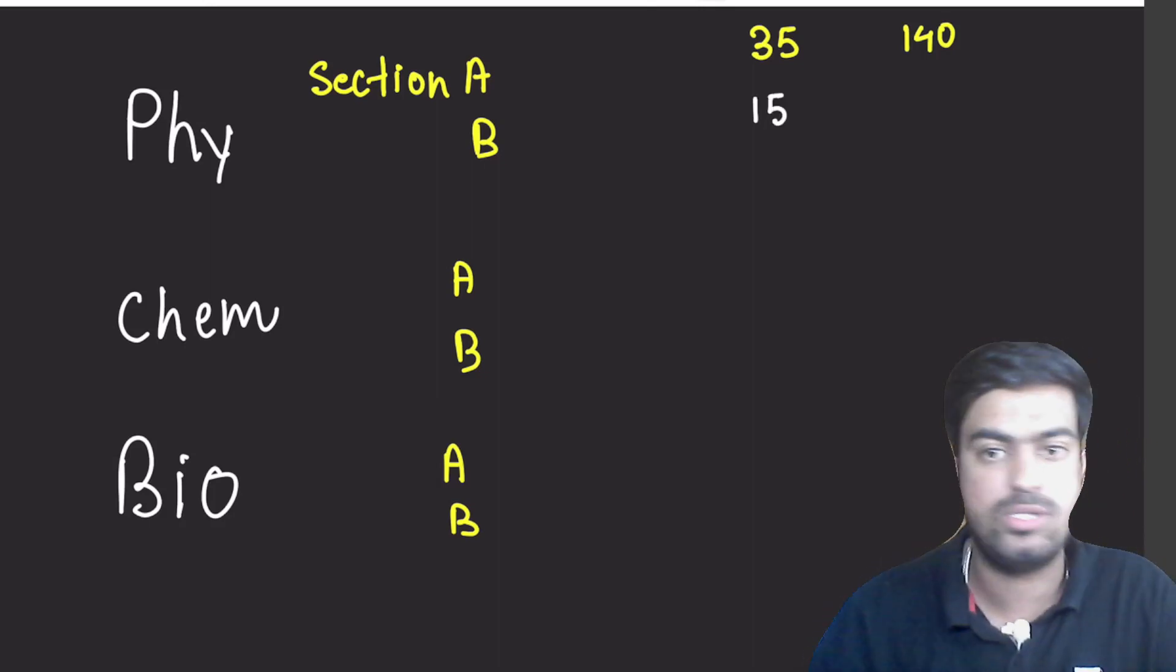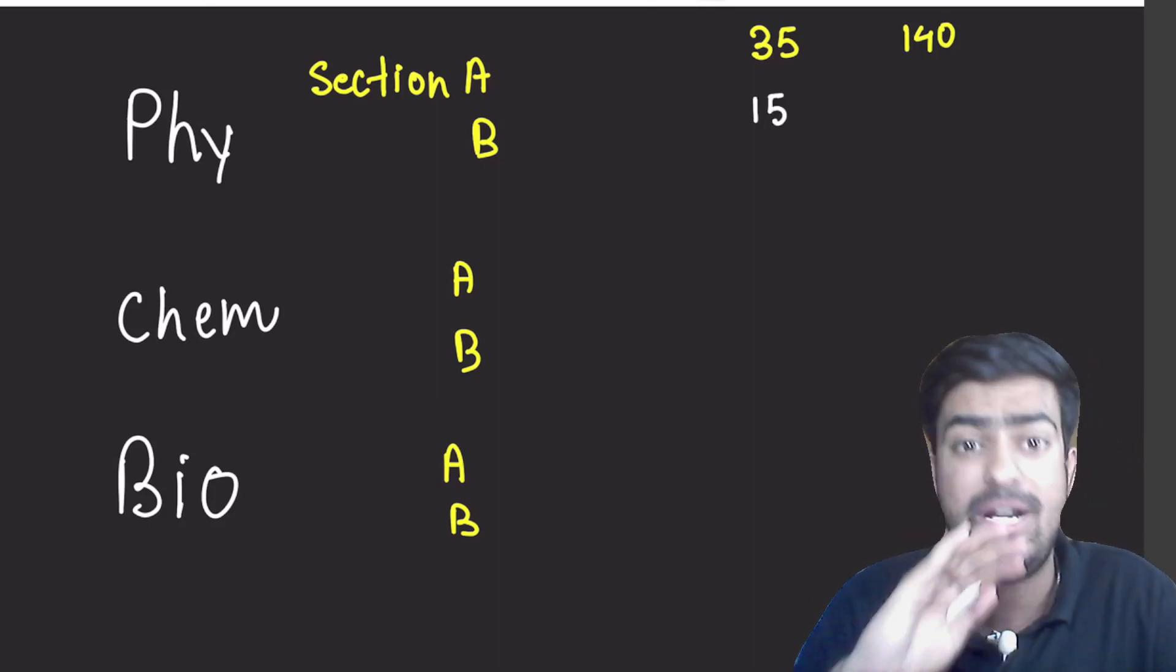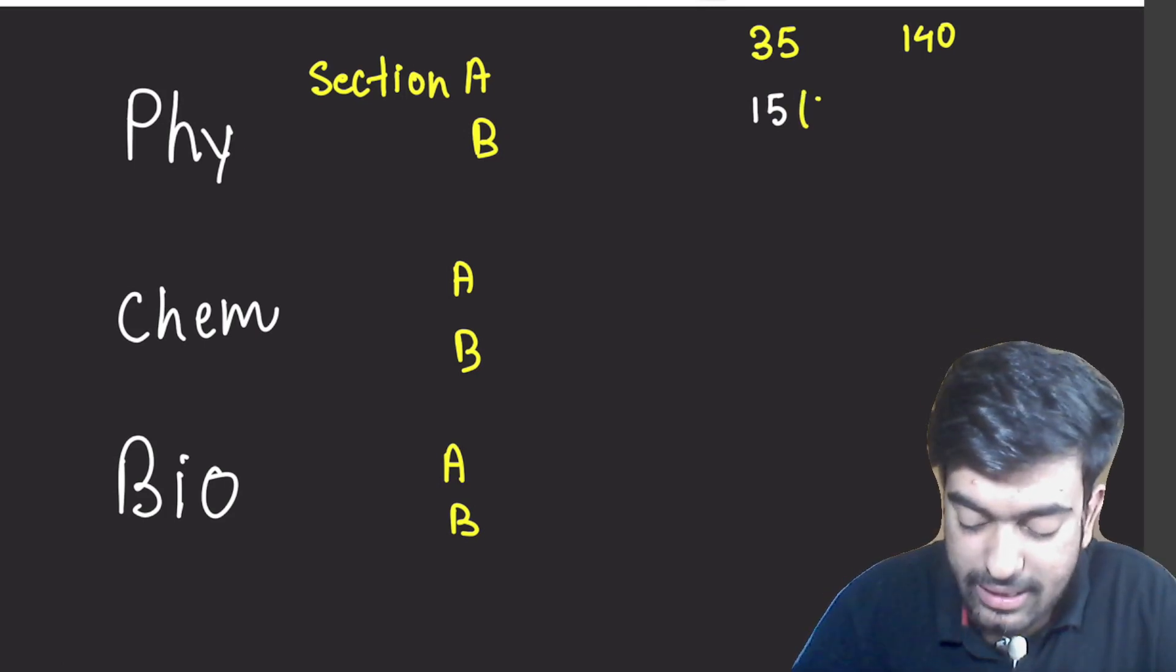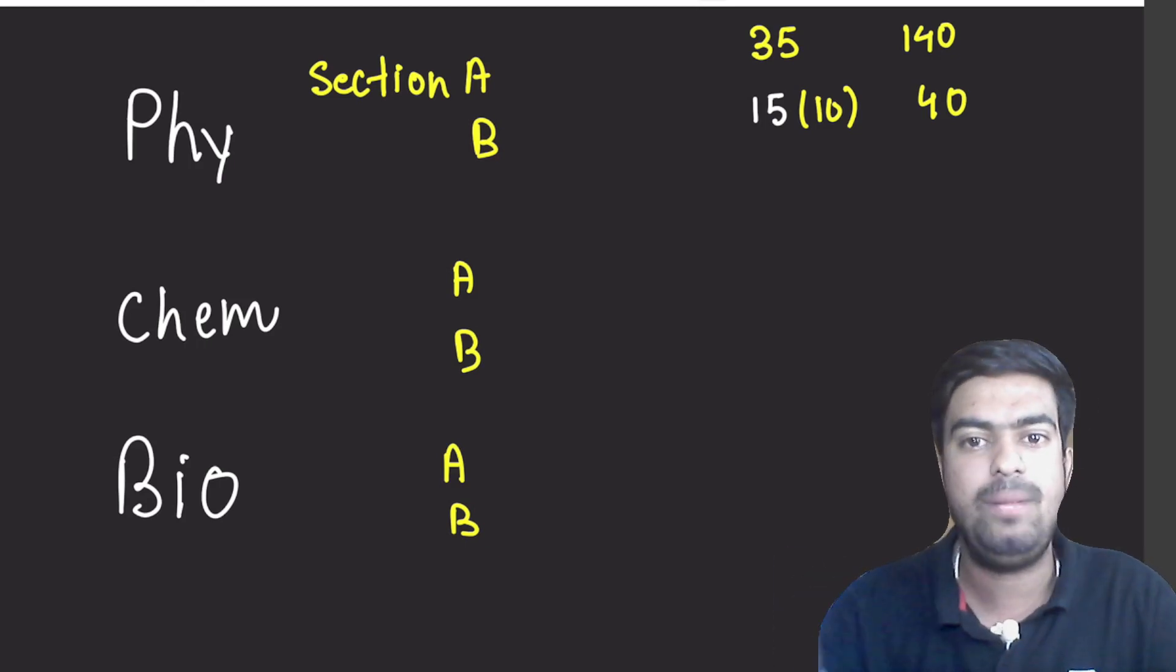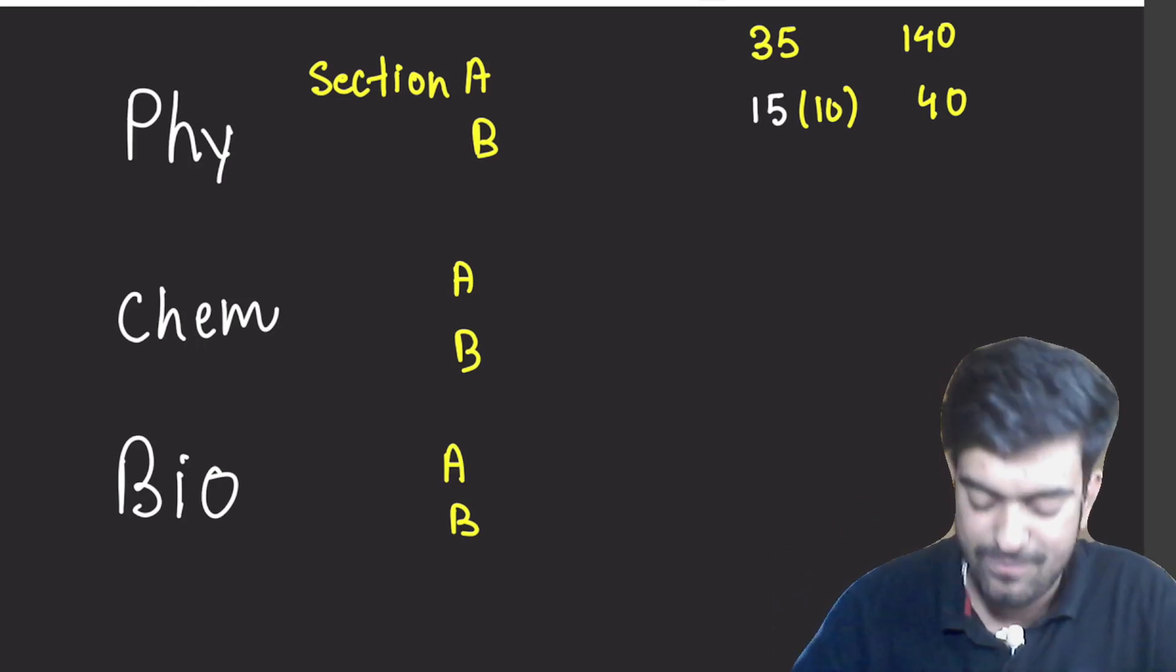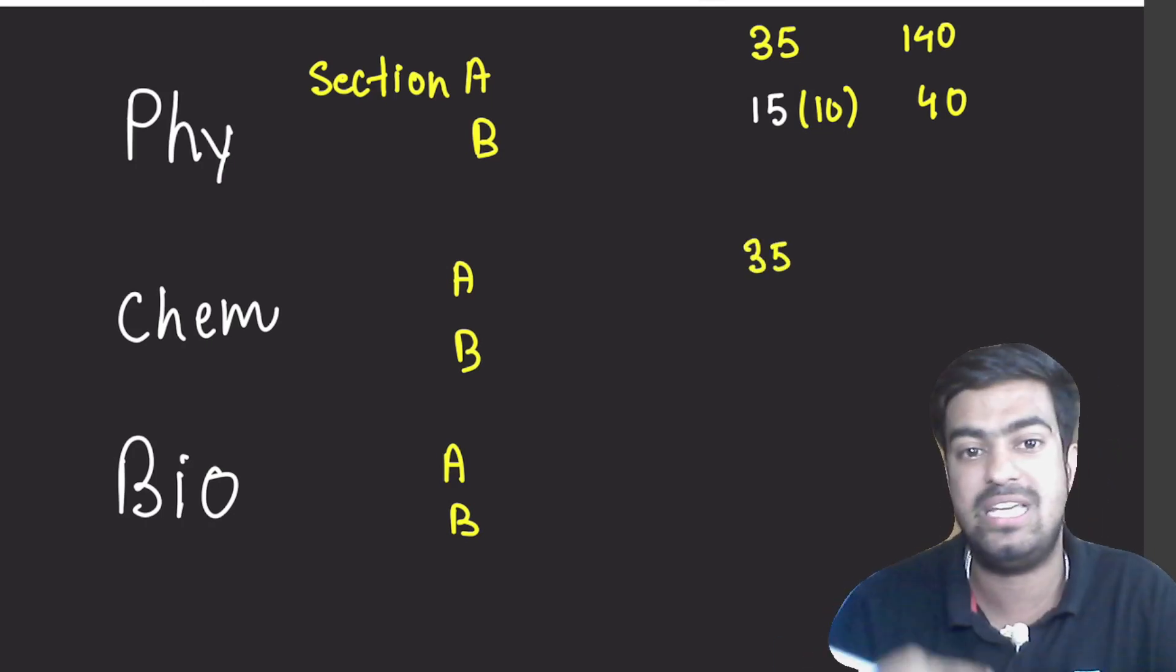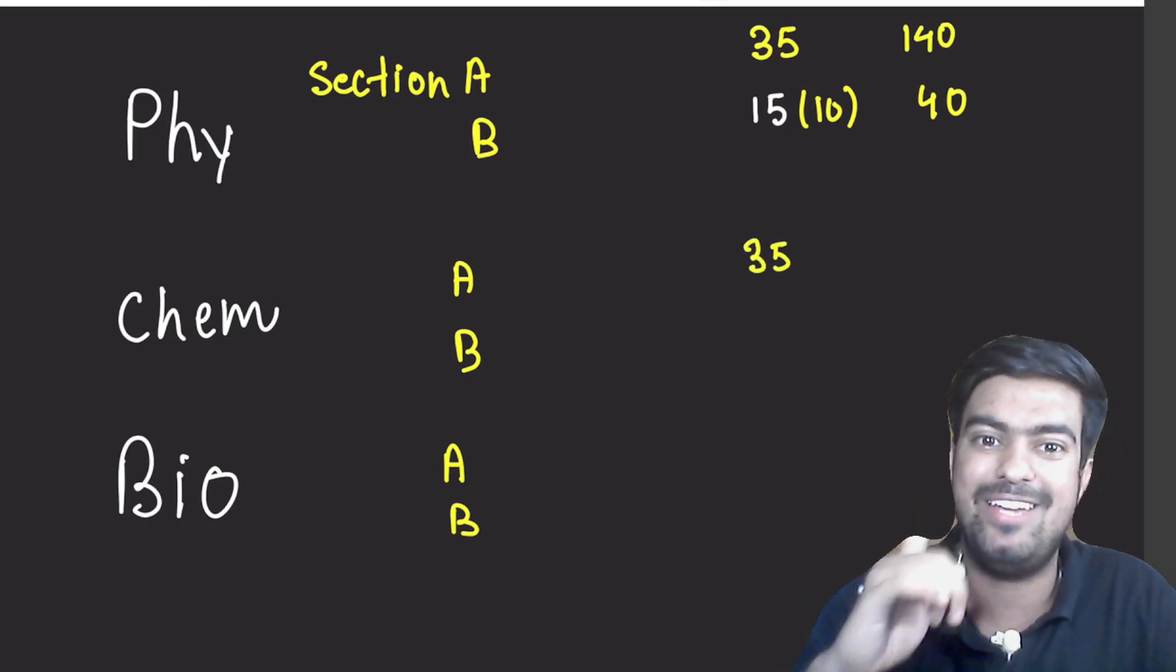And Section B is going to have 15 questions, but you don't have to attempt all the 15 questions. You have to only attempt 10 questions. So this is going to give you 40 marks. Hence, Physics 140 plus 40 gives you 180 marks.